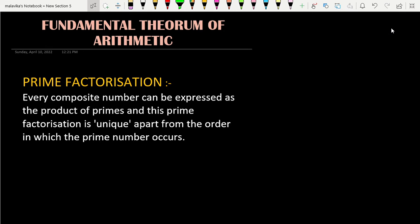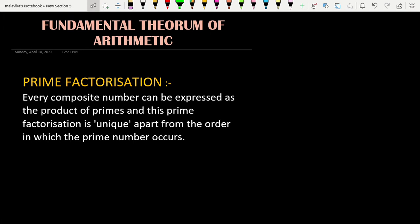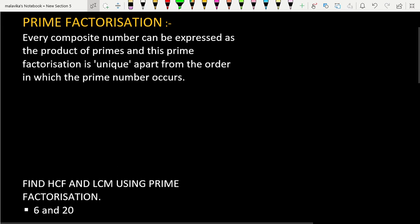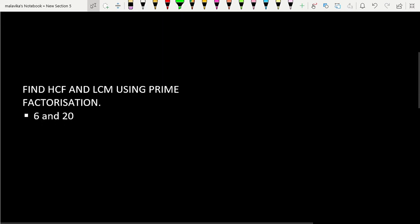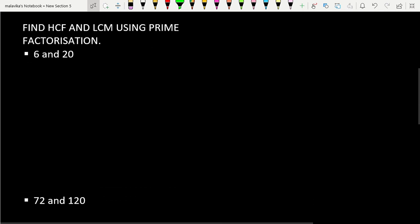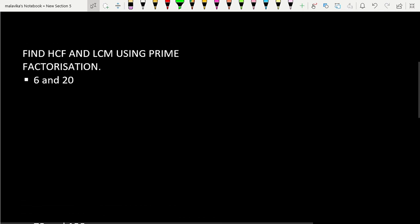Let's take a few examples of how we can use the Fundamental Theorem of Arithmetic, or prime factorization, to find LCM and HCF. Here we have a question: find HCF and LCM using prime factorization of 6 and 20.